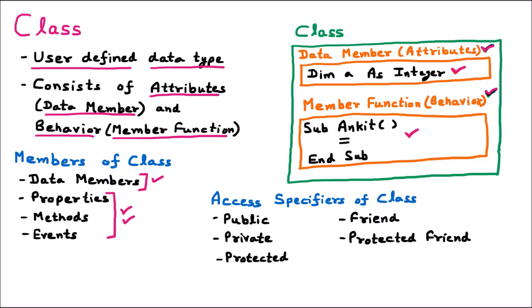On the class we can provide various access specifiers — restrictions on the class. Public means everybody can access. Private means only the code where the class is available can access it. Protected means the derived class is accessing. Friend means whoever is the friend of the class has access to the member functions. Protected friend is the combination of both protected (derived class) and friend. So this is all about the class.